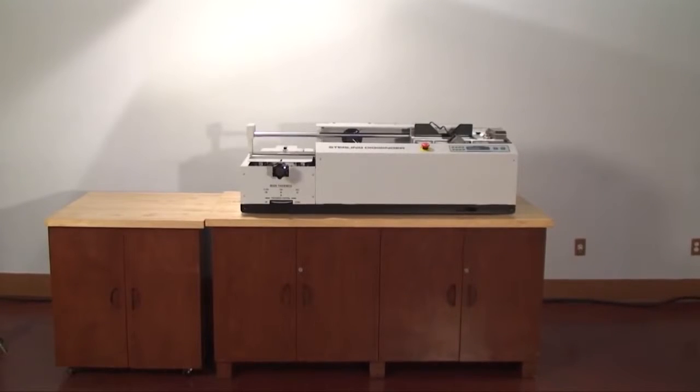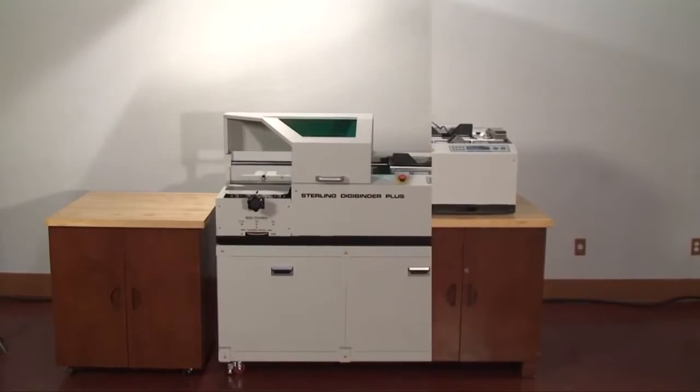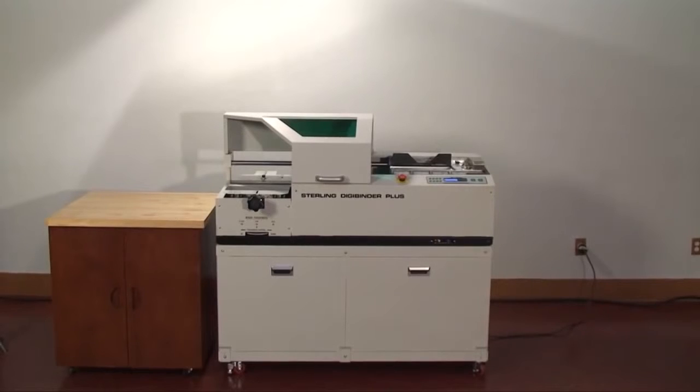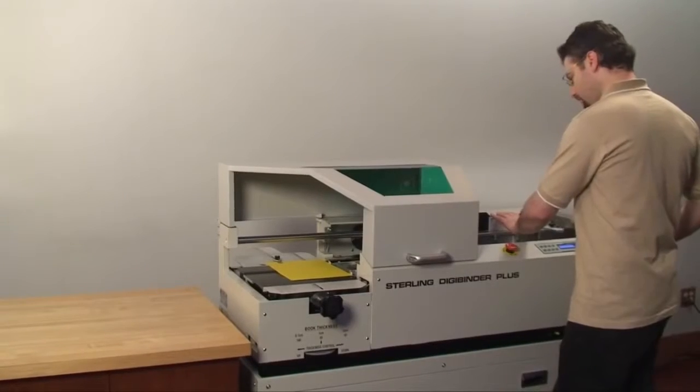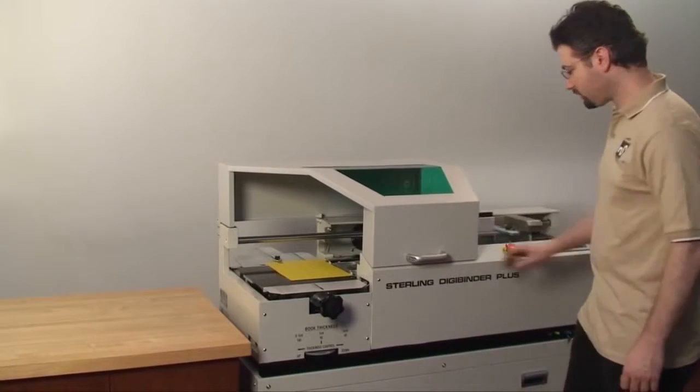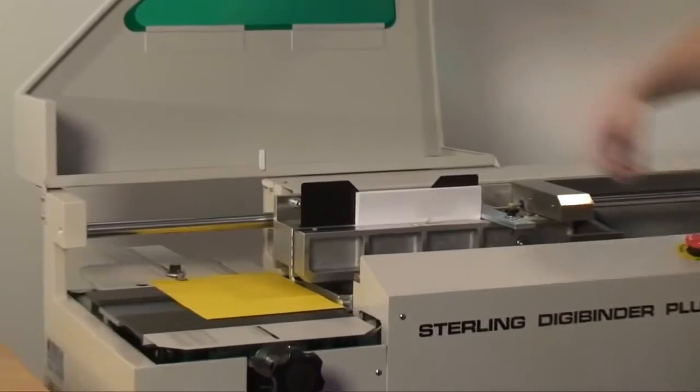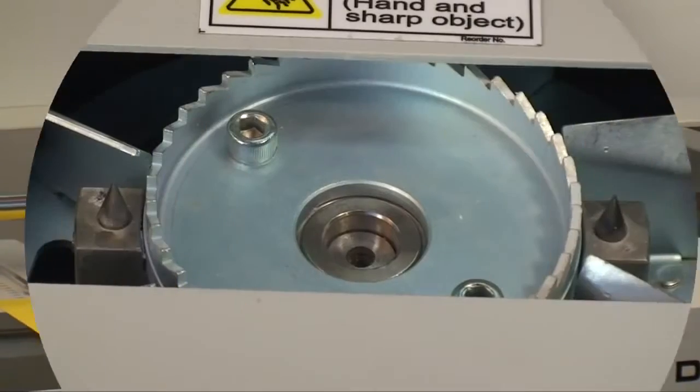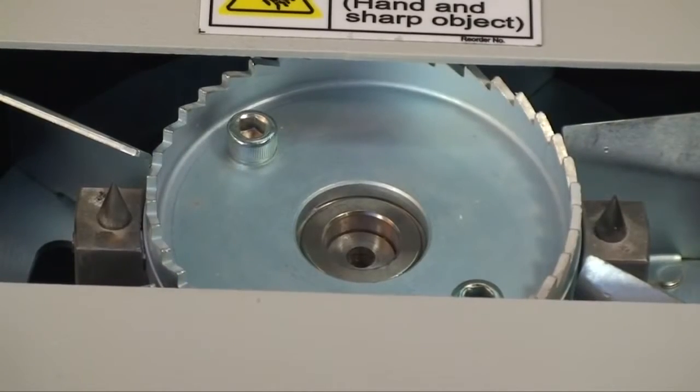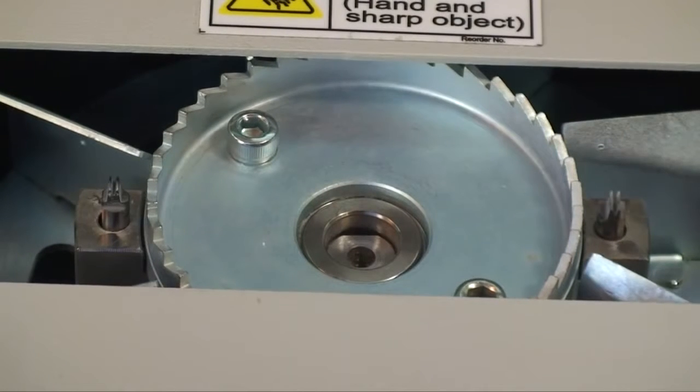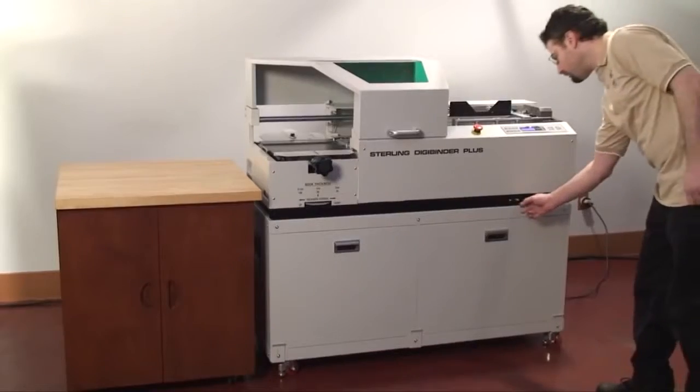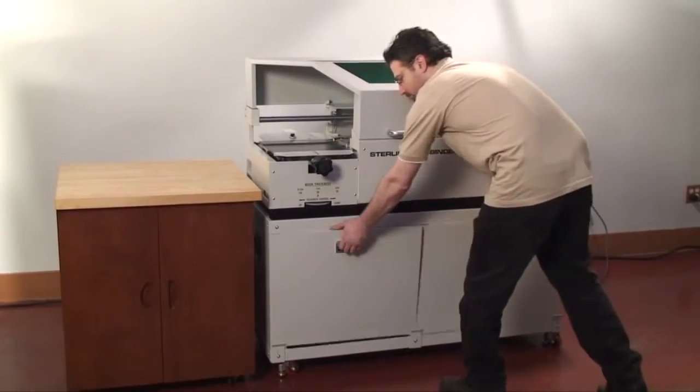The DigiBinder Plus has all the great features of the DigiBinder plus a stand, a safety cover, a much heavier duty roughing blade with thicker notching pins with optional V pins for problem stock, and vacuum dust removal.